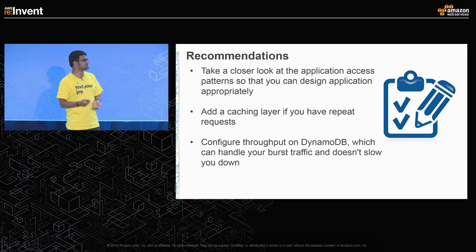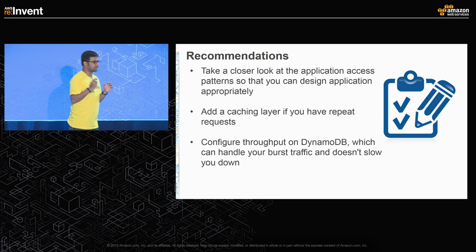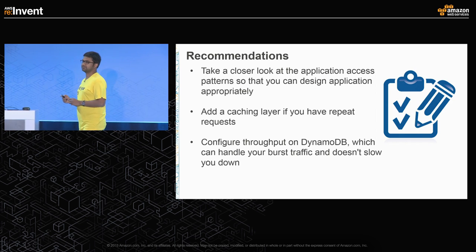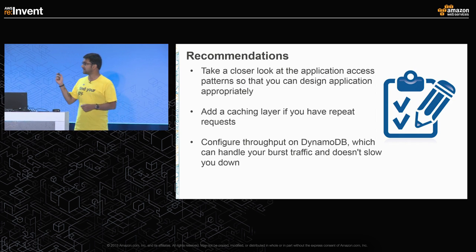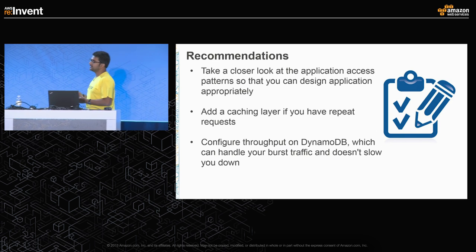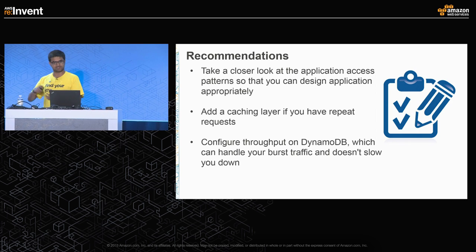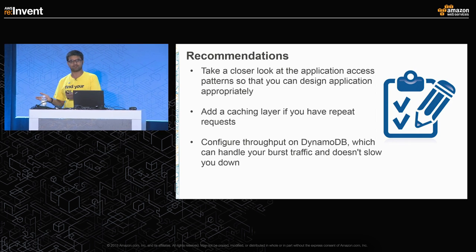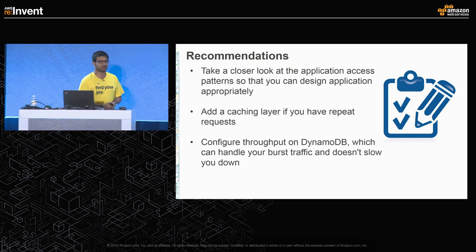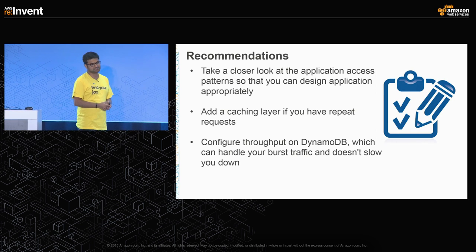Some recommendations based on our experience: take a close look at your access patterns — they will tell you a lot about how to design your application. If you see many repeat requests coming into the system, try adding a caching layer; we use Redis but you can use Memcached as well. Keep a very close eye on the write throughput and read throughput you have configured — changing them affects cost, but at least it keeps your application running. Our experience using DynamoDB and ElastiCache for this application will hopefully help you as well.